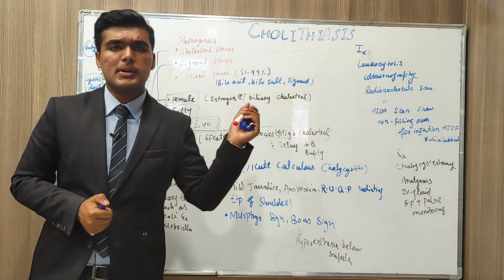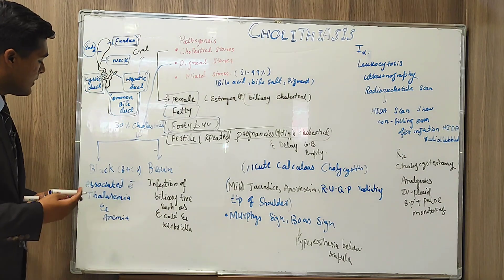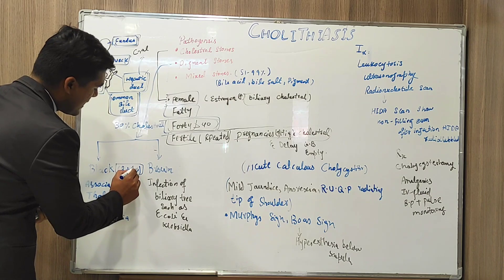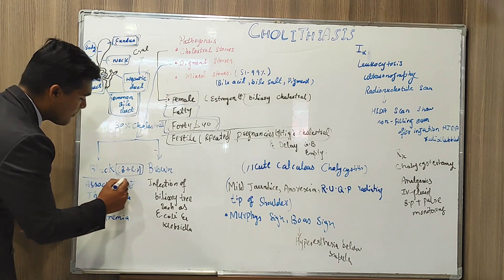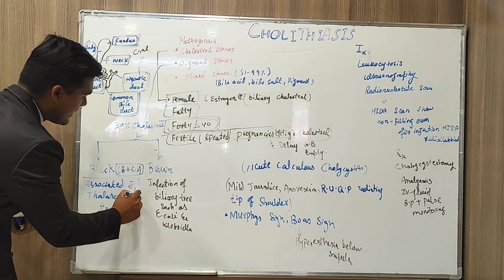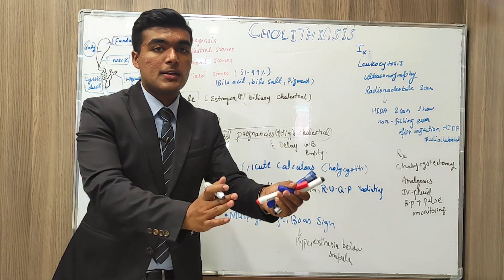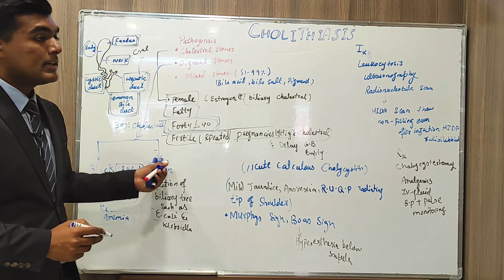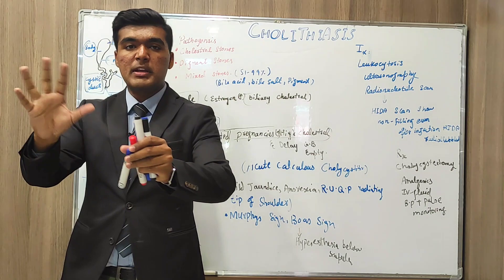Pigment stones contain about 30% cholesterol. There are two forms: black and brown pigment. In black pigment stones, insoluble bilirubin mixes with calcium phosphate and calcium bicarbonate, and they are mostly associated with thalassemia and anemia. In brown pigment stones, infection is the cause — bacteria such as E. coli and Klebsiella affect the biliary tree, causing stone development.